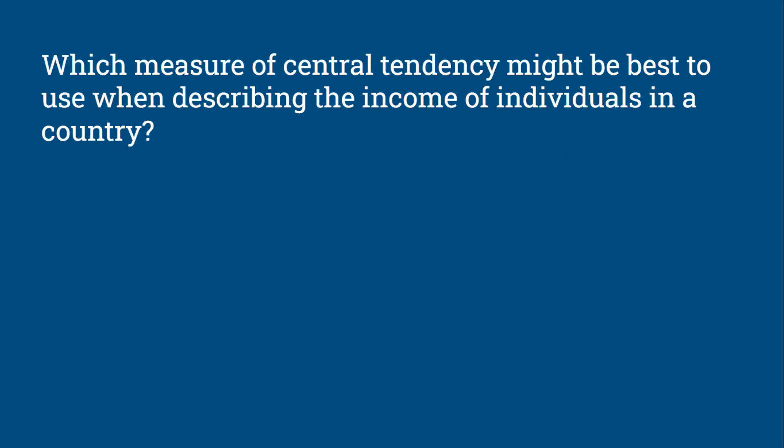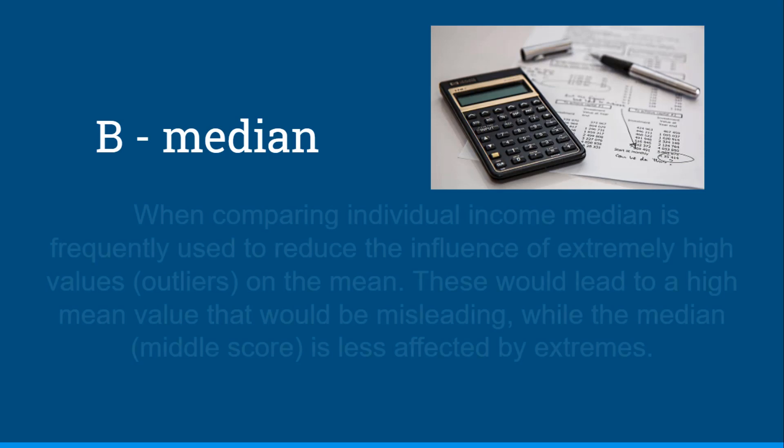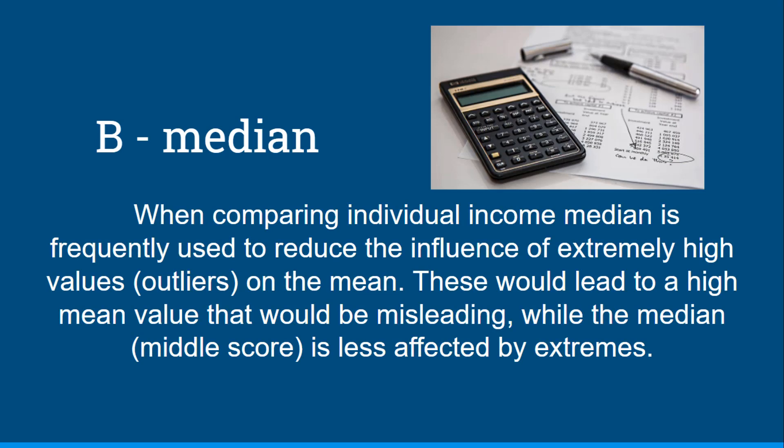Which measure of central tendency might be best to use when describing the income of individuals in a country? Would it be the range, the median, the mean, the standard deviation, or the p-value? This would be the median. When comparing individual income, the median is frequently used to reduce the influence of extremely high values, or outliers, on the mean. Some people have very high income, which would lead to a high mean value that would be misleading, while the median — the middle score — is less affected by those extremes.